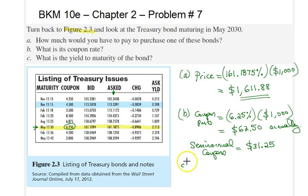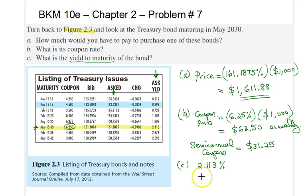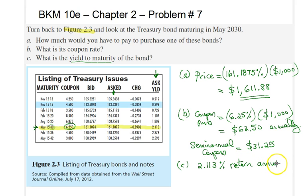Finally, part C: we are looking for the yield to maturity — synonymously, you can call it the required rate of return of the investor — and that would simply be listed under the ask yield column. In this case, the ask yield is 2.1113%. The meaning of this number is that this Treasury bond would give its investor, who is willing to hold it for the next approximately eighteen years until 2030, a 2.1113% annual return. That solves our problem — hope to see you in the next video.